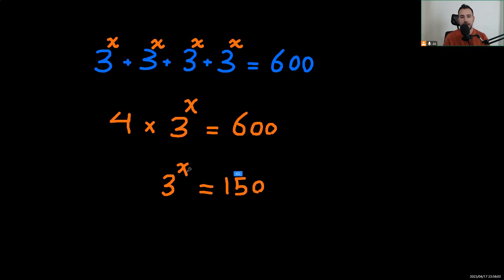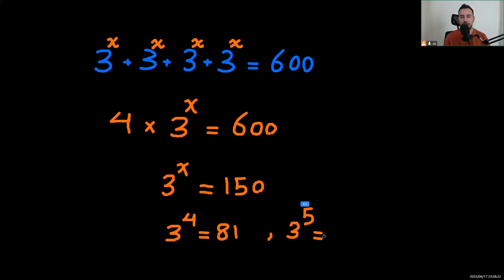Now let's check if x is an integer. If x is 4, we know that 3 to the power of 4 is 81, and 3 to the power of 5 is 243. So the value of x is going to be more than four and less than five.